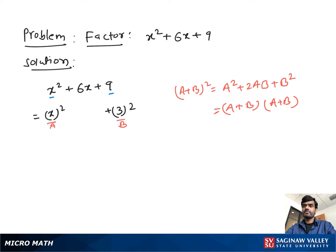If we suppose x as a and 3 as b, we need the middle term which is 2 times a times b. So we can write the middle term as 2 times x times 3. Now it looks like a squared plus 2ab plus b squared.